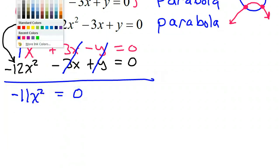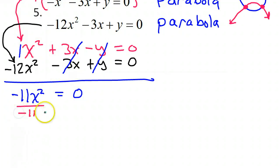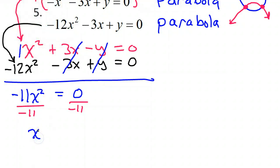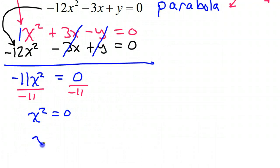So that's going to leave me with -11x² = 0. So this is easy to solve for if we divide both sides by negative 11. Then that's going to give us x² = 0, which of course means x = 0. The only thing you can square that makes 0 is 0.